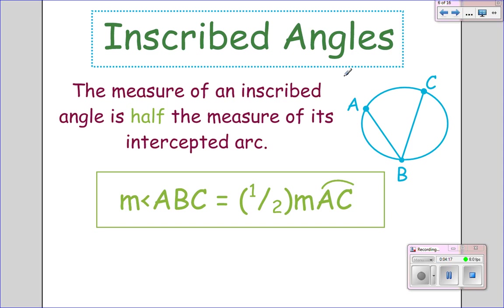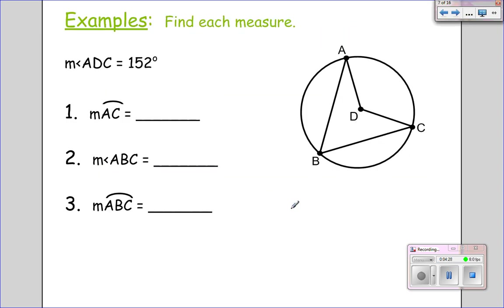I could also say, let's say this arc is 100 degrees. Then the angle would have to be 50. So I can go both ways with it. Alright. So let's go ahead and practice here.